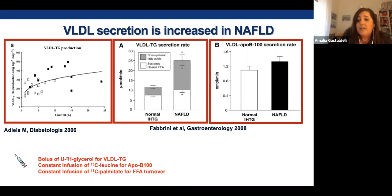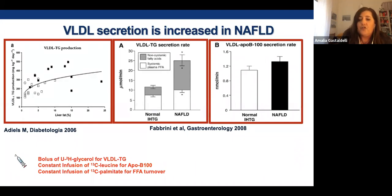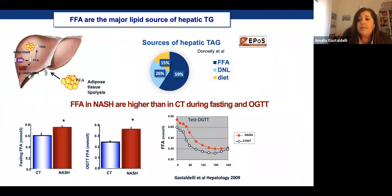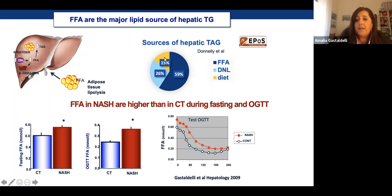Studies using fluxomics — a bolus of deuterated glycerol to measure VLDL-triglyceride secretion — show an increased VLDL-TG secretion rate in NAFLD. Two studies from the groups of Dr. Truskin and Sam Klein show this increased VLDL integration rate, while VLDL apolipoprotein B100 secretion rate is very similar between NAFLD and normal subjects, measurable using C13-leucine infusion. A study by Donnelly showed that the sources of hepatic triglycerides are mostly from adipose tissue free fatty acids (~60%), about 26% from de novo lipogenesis, and only ~15% from dietary lipids.